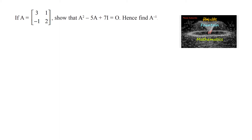If A is equal to the matrix [[3, 1], [-1, 2]], then show that A squared minus 5A plus 7I is equal to 0, where I is the 2x2 identity matrix [[1,0],[0,1]]. Hence, find A inverse.